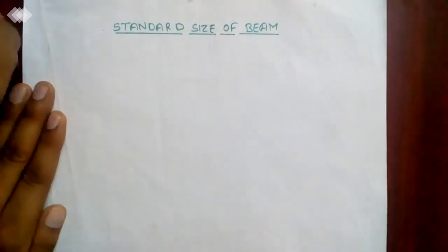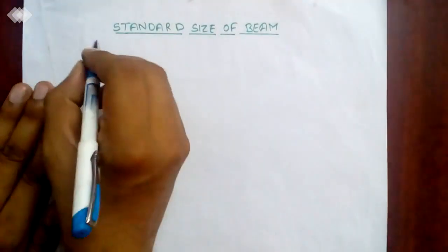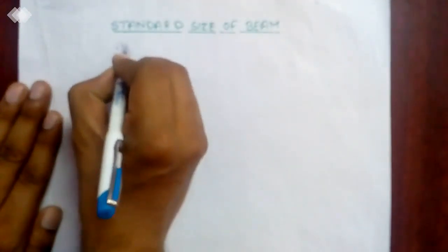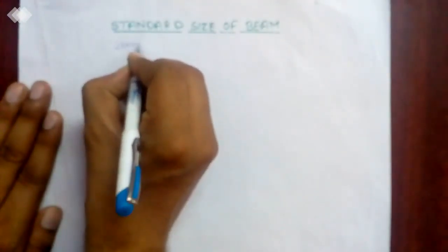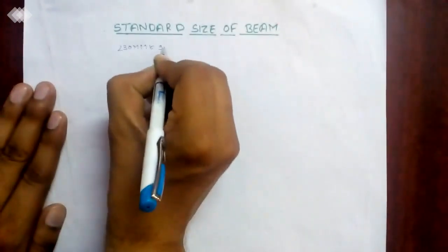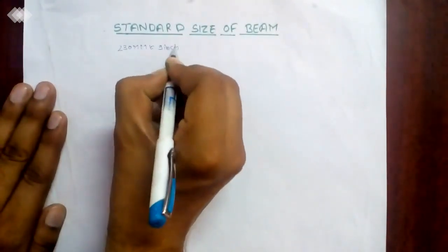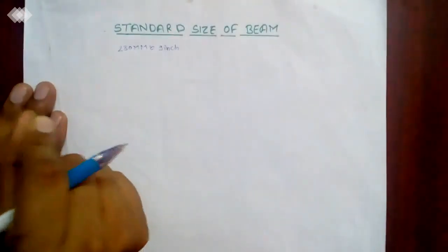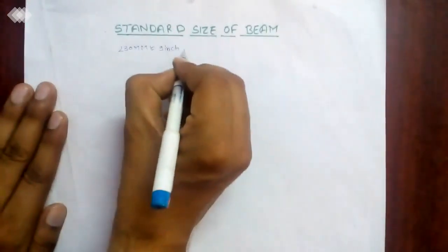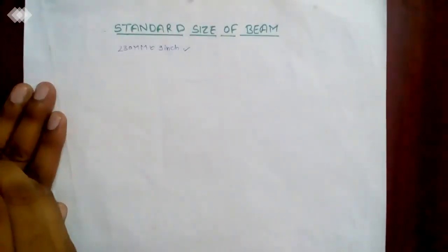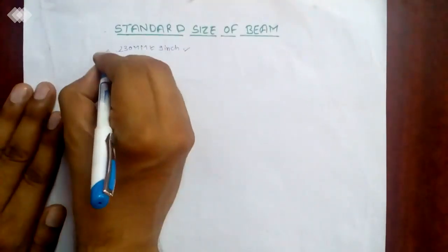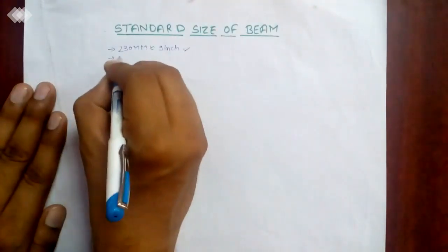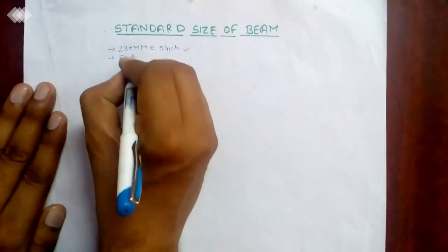We kept generally in buildings 230 mm, that is equivalent to 9 inches. So the width of the beam we kept as 230 mm or you can say 9 inches. It is the most general size used in residential buildings.